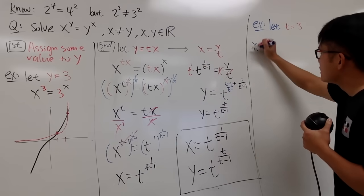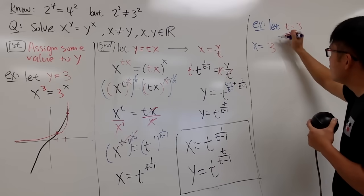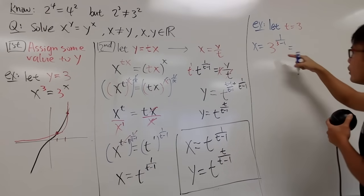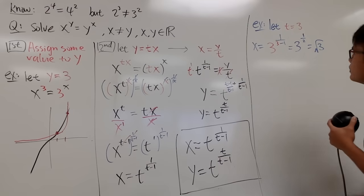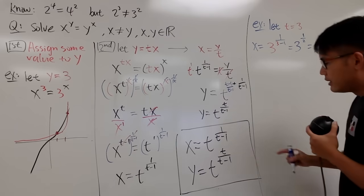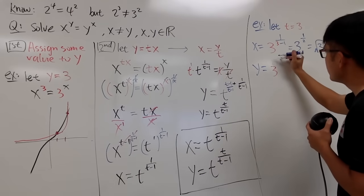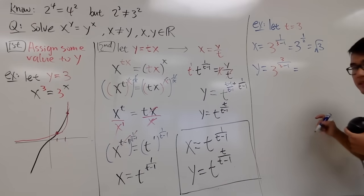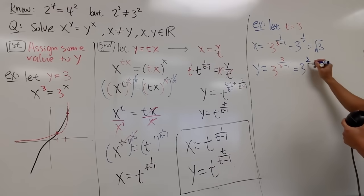Anyway, right here, x will be t, which is my 3 right here, raised to the 1 over 3 minus 1. Work this out real quick. This is just 3 raised to the 1 half power. In another word, square root of 3. Likewise, for y, we get 3 raised to the 3 over 3 minus 1 power. And this is going to be 3 raised to the 3 over 2 power. And this is square root of 3 to the 3rd power. And this is, of course, square root of 27.